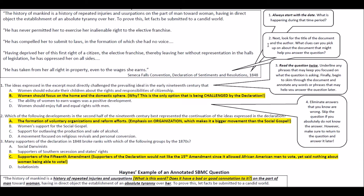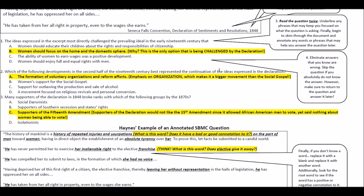Always start with the date — what is happening during that time period? It's 1848. Step two: look for the title of the document and the author. What clues can you pick up on that might help you answer the question? We know it's called the Declaration of Sentiments and Resolutions from the Seneca Falls Convention. Hopefully you've already got a little bit of background and can start predicting what this document may be about.